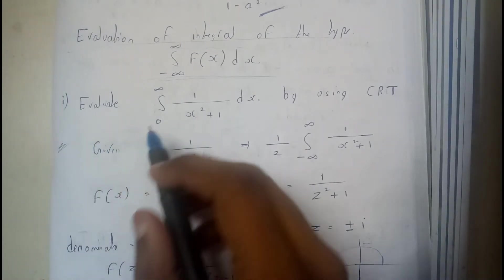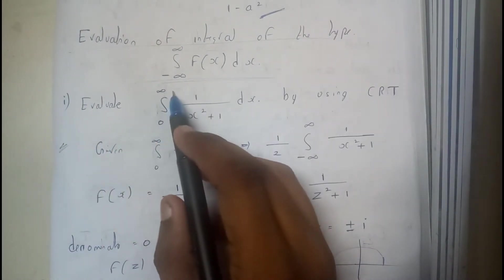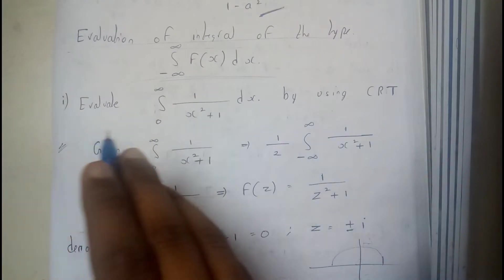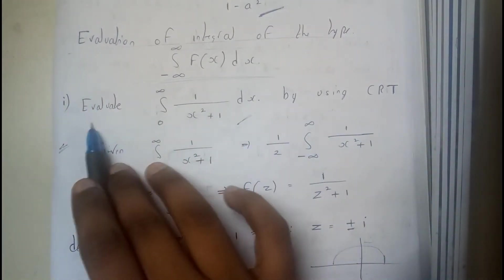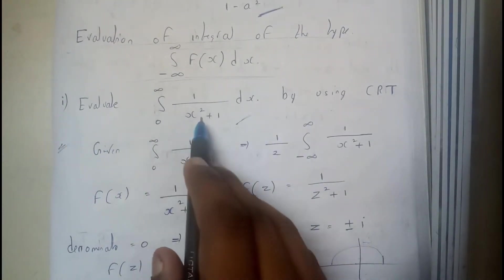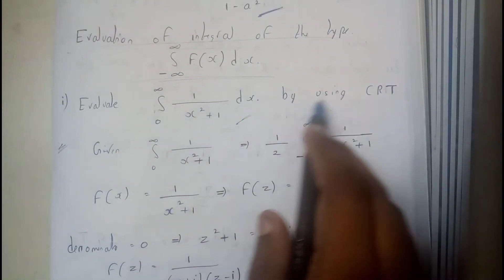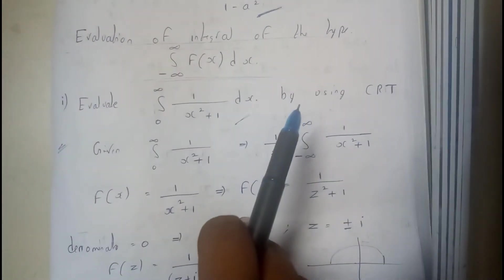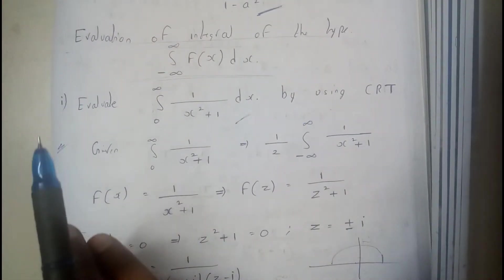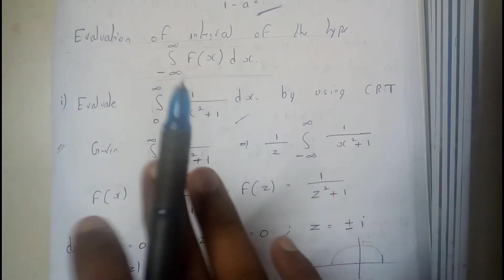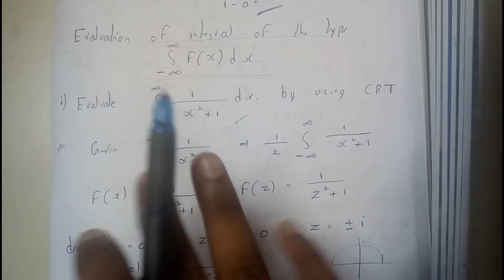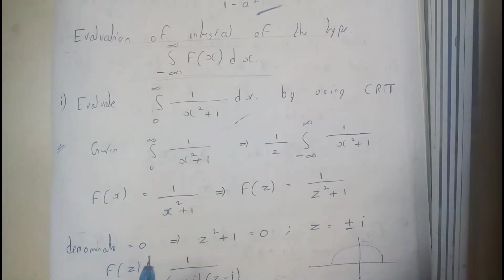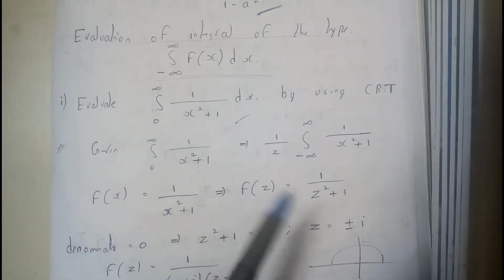So the given question should be minus infinity to infinity. So then the question will be really easy guys. So that's the reason why I have took a small twisty question for us. Evaluate integral 0 to infinity 1 by x square plus 1 dx by using CRT. So even in this method he will be giving any radius or something like that. So you need to assume that the positive imaginary parts are inside the circle and the negative imaginary parts are outside the circle. So let us go through the solution.